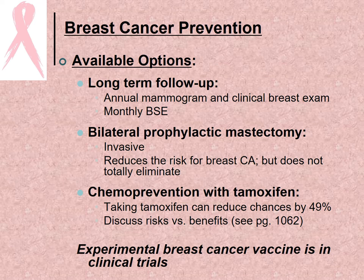Prevention options include long-term follow-up care, annual mammogram and clinical breast exam, and monthly breast self-exam. A bilateral prophylactic mastectomy removes both breasts, reducing but not totally eliminating cancer risk. Many women carrying the BRCA1 or BRCA2 gene have opted for this procedure. Chemoprevention with tamoxifen can reduce the chance of getting breast cancer by 49%, but there are significant risks versus benefits to consider, found on page 1062 in the textbook.